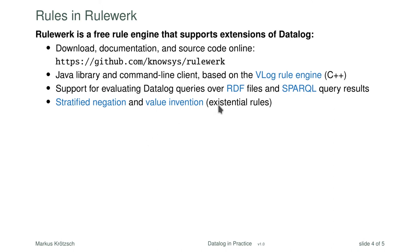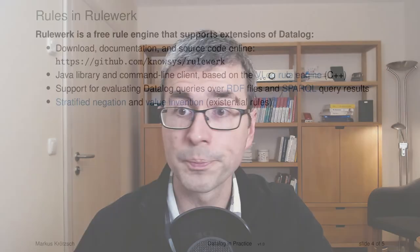Behind all of this is a rule engine called VLog that does the heavy lifting. It is a column-store-inspired, very memory-efficient implementation of Datalog, which is a good match for teaching since it is optimized to run on laptops — its C++ architecture is really useful for using hardware efficiently, even limited hardware. RuleWork supports RDF connections, so you can load RDF directly in different formats: N-Triples, Turtle, RDF/XML. You can even load data from SPARQL queries issued to a remote service. Over all of these data sources you can then run rules and get recursive computations and results back. There is also support for stratified negation, and another feature called value invention — also known as existential rules or tuple-generating dependencies — allowing you to create new constants as you go along.